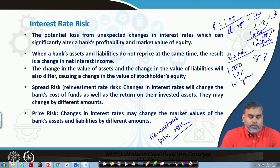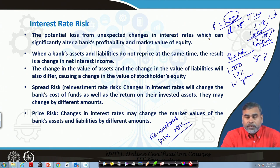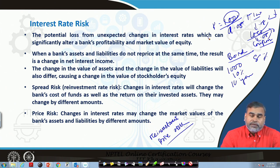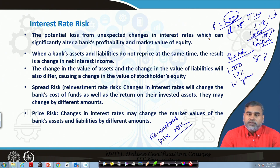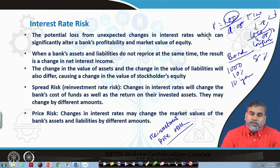If the interest rate has increased, whatever coupons we receive periodically and reinvest in the market will get us more return. So an increase in the interest rate will have a negative impact on the bond price but a positive impact on the reinvestment return. Similarly, if the interest rate declines, the price will increase but the reinvestment risk will increase because the return from reinvestment of coupons will be declining. That is why interest rate risk has two components: one is the reinvestment risk or spread risk, and another is the price risk. The change in interest rate changes the bank's cost of funds and the return on invested funds, and they may change by different amounts.